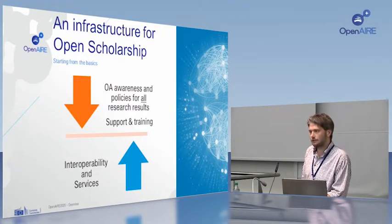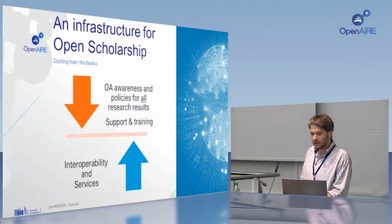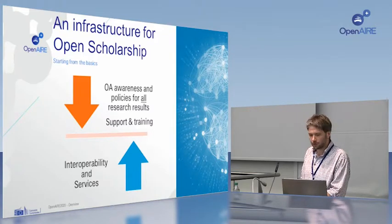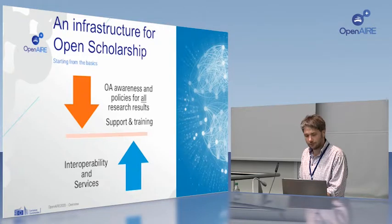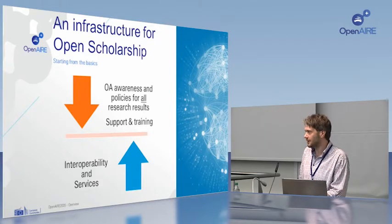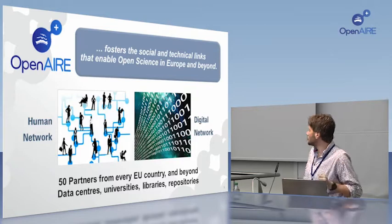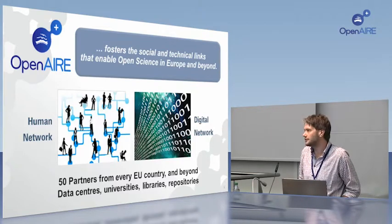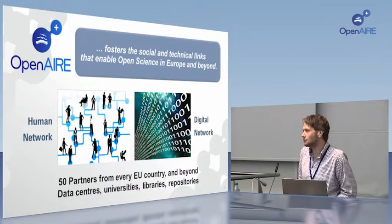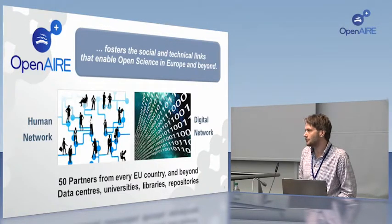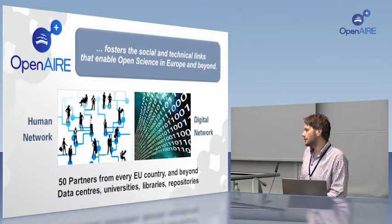How do we do this? We have a network of national open access desks that provide awareness and help to harmonize and align policies, and that provide support and training in how and what open science is and how you do it. We also provide interoperability and services. On the one hand, there is this human network, and on the other side, a digital network. The current project phase is OpenAIRE 2020, with 50 partners from all over Europe.